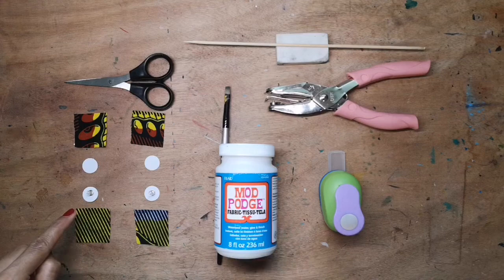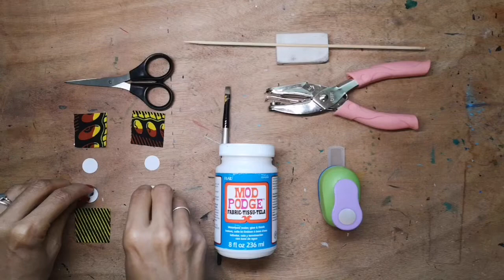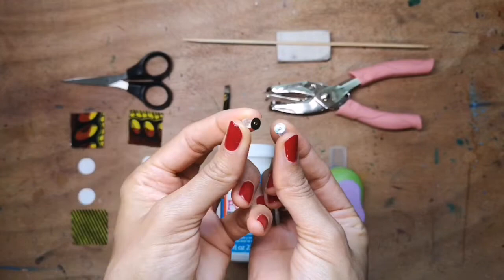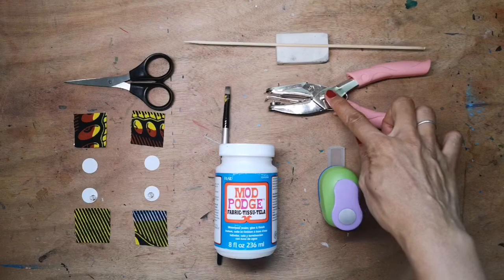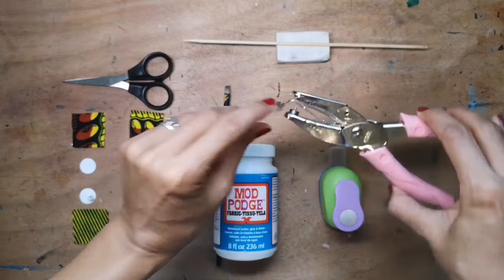You'll need two flat back earring backs. You'll also need either a 1.5 millimeter hole punch or a sharp kebab stick and a rubber work perfectly well if you don't have one of these.